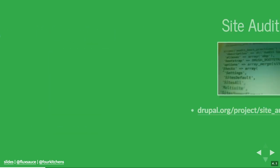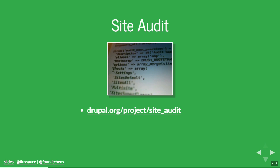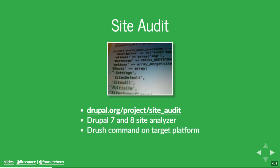The first tool I'm going to talk about is Site Audit. This is an open source project available on drupal.org. It's a Drupal 7 and Drupal 8 site analyzer that looks at content and configuration and provides a report. In its current state, it's a Drush command that runs on the target platform — it's not actually installed in the site itself. It powers Launch Check, specifically Launch Check for Drupal on Pantheon.